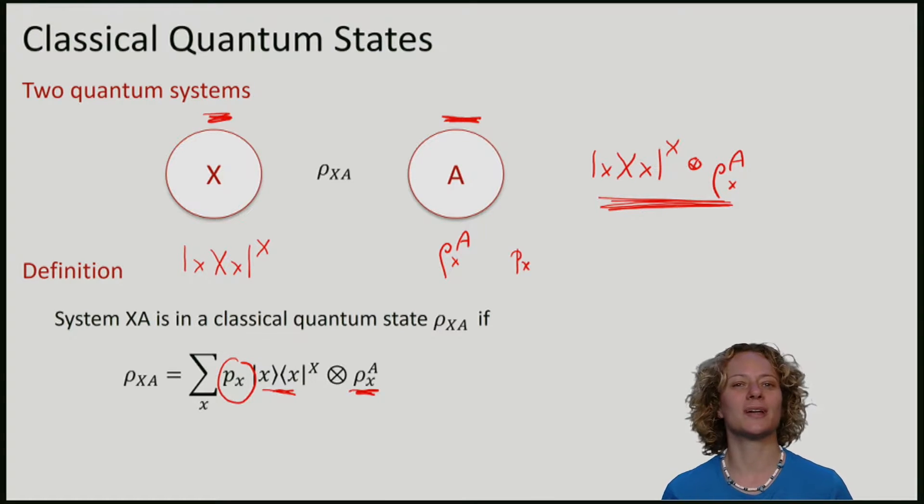This is what we call a classical quantum state. There is one register which is classical and there is another register which is quantum. In short, we will also call this a CQ state.